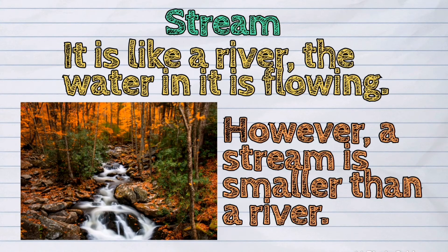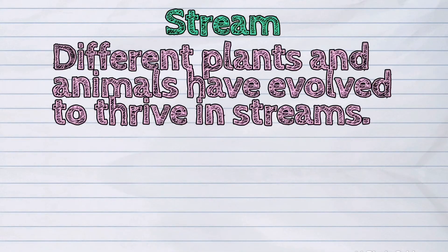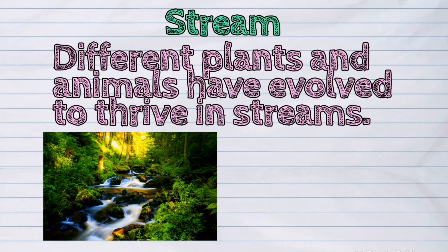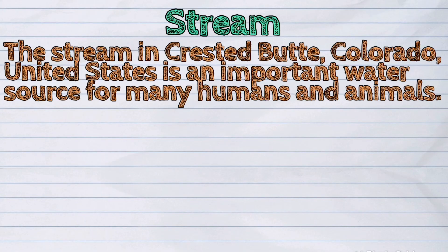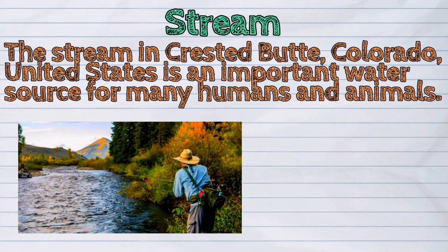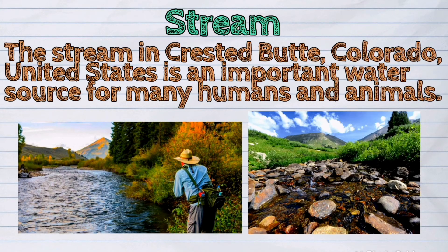A stream is like a river — the water in it is flowing. However, a stream is smaller than a river. Different plants and animals have evolved to thrive in streams. The stream in Crested Butte, Colorado, United States, is an important water source for many humans and animals.